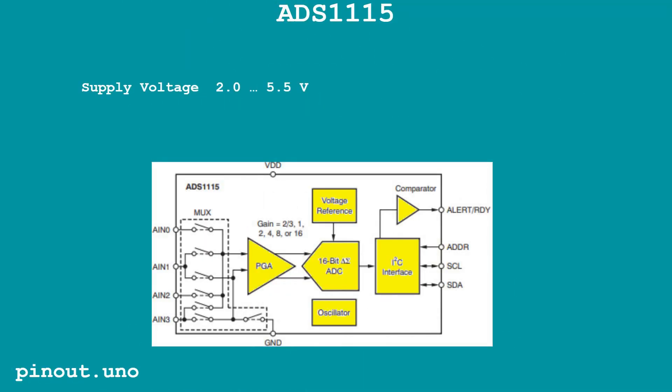Supply voltage ranges from 2 volts to 5.5 volts, making it compatible with both 3.3-volt and 5-volt microcontrollers. The downside is that the logic power is tied to the measurement power, meaning the voltage on the analog inputs can only exceed the supply voltage by 0.3 volts. As a result, the logic signal voltage level may impose limitations on the measurable voltage range.